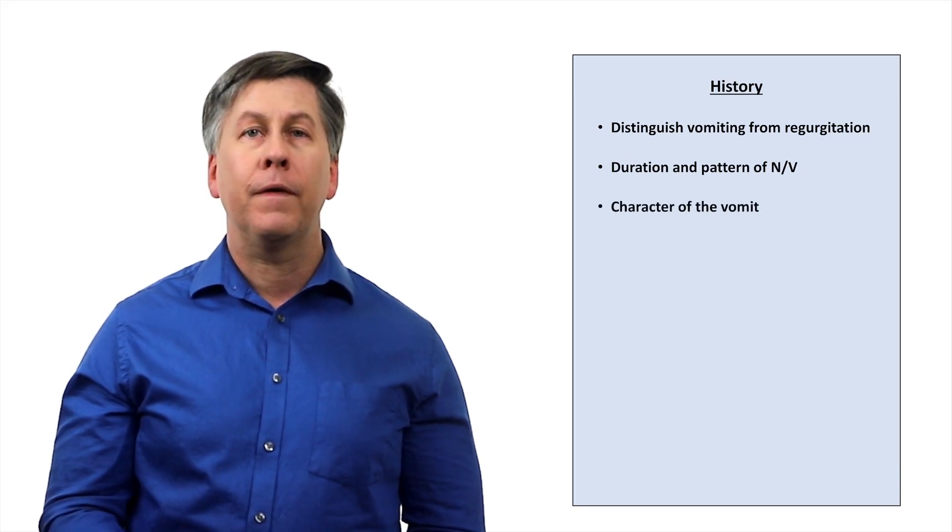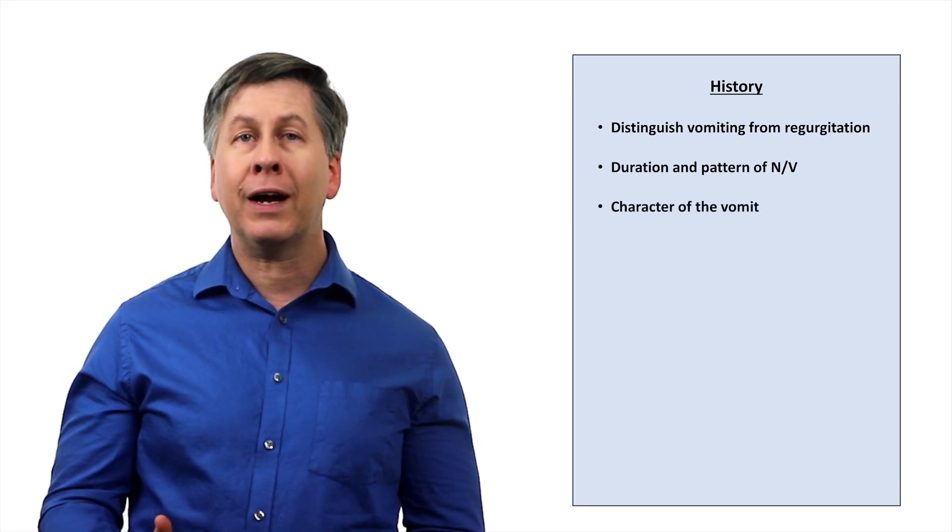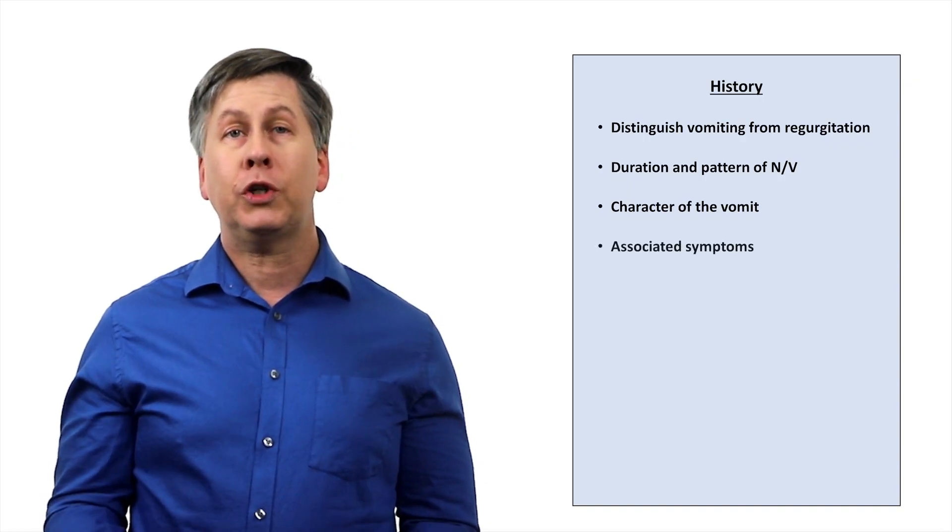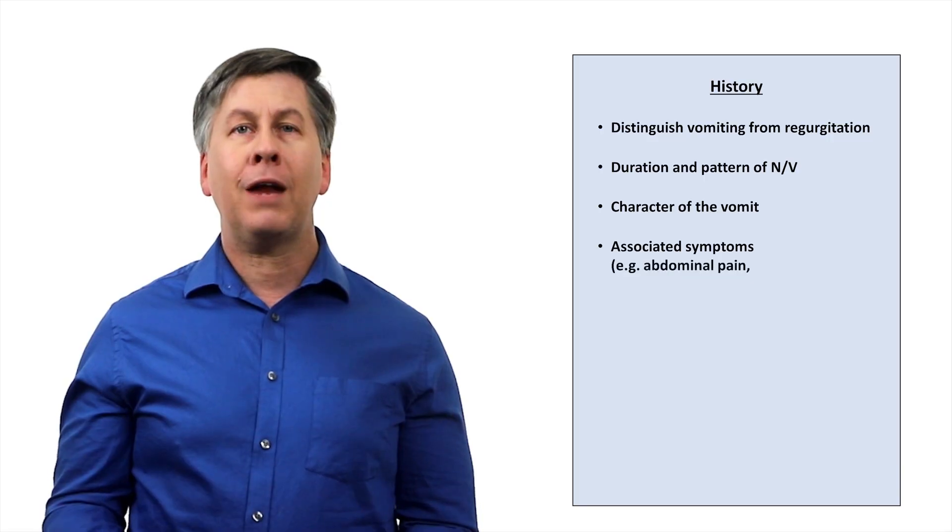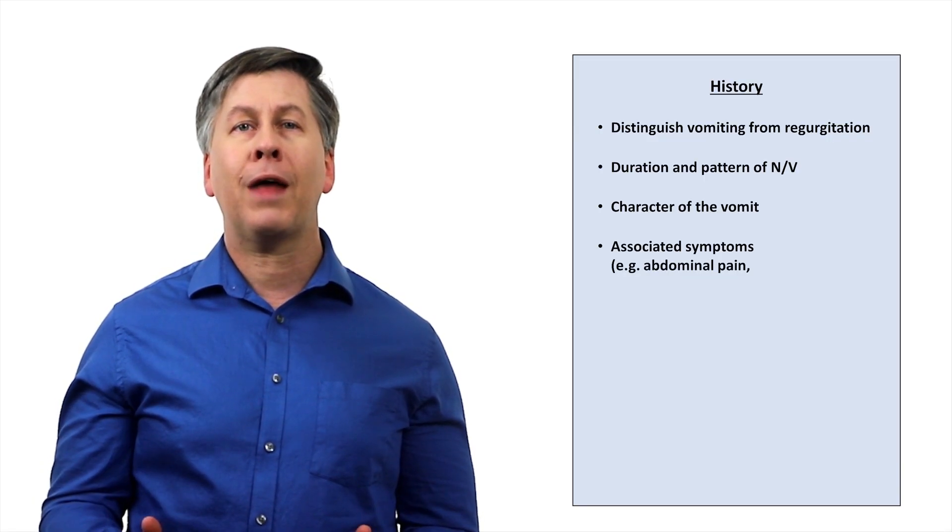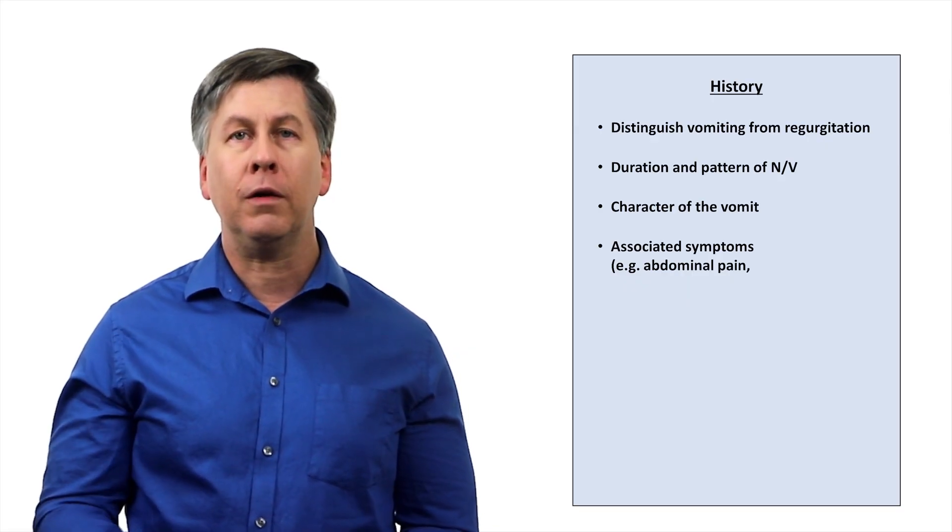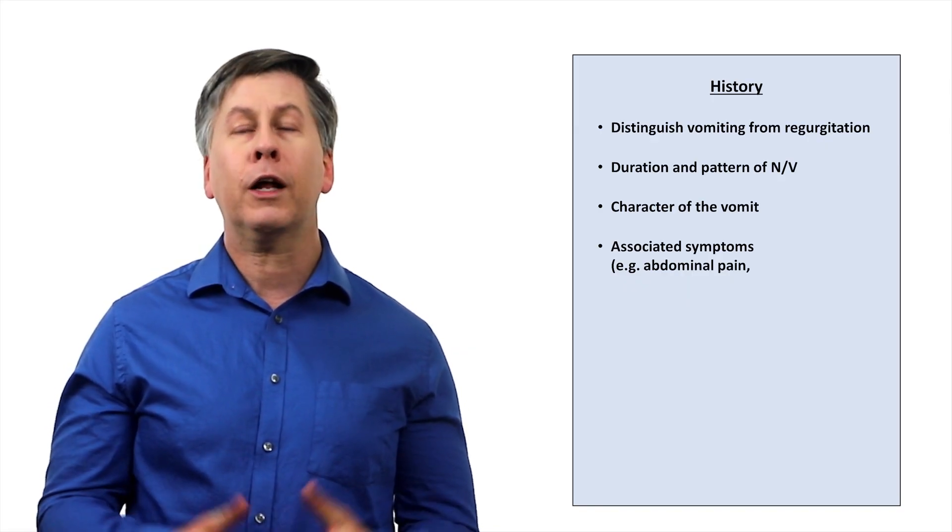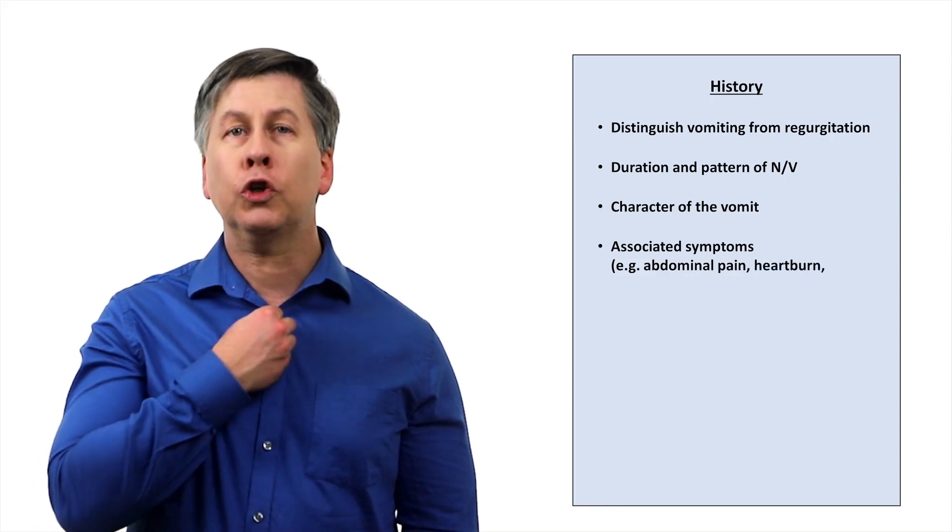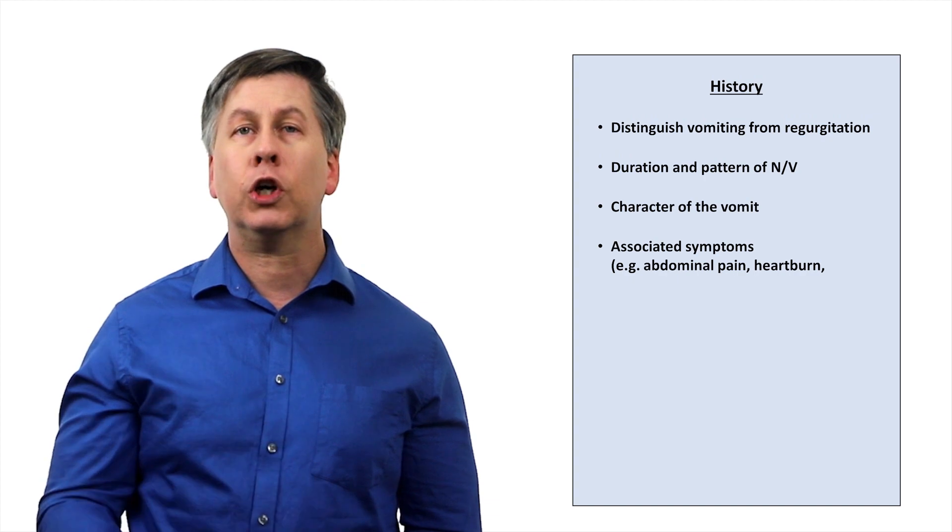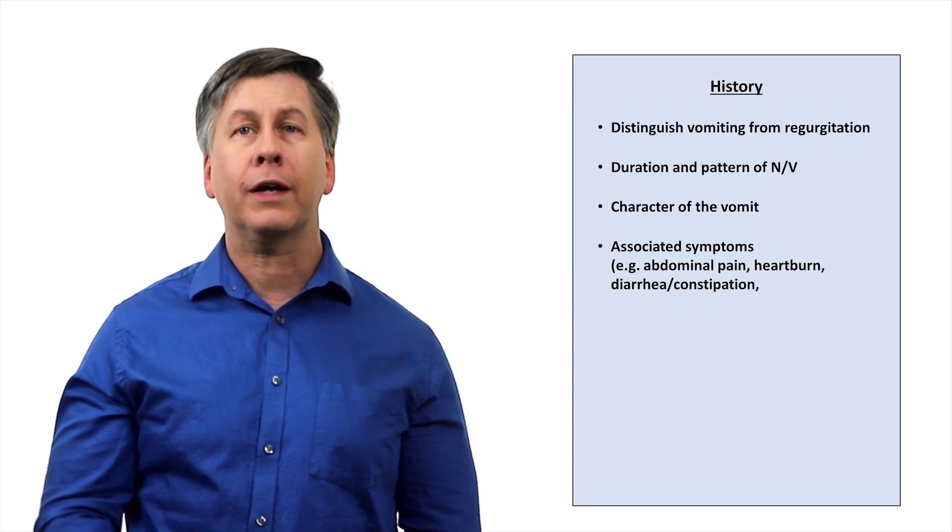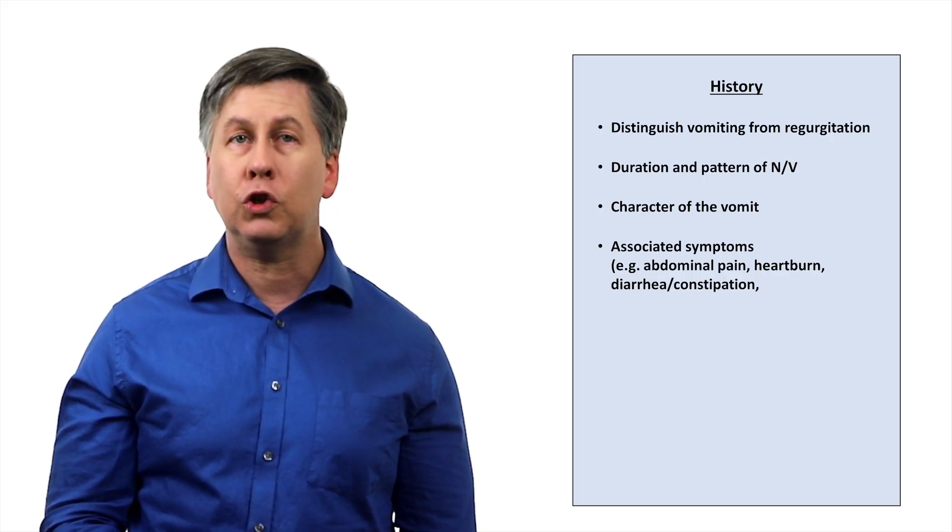What is the character of the vomit? The presence of material that looks like coffee grounds is suggestive of bleeding in the GI tract. Are there any associated symptoms? Abdominal pain that improves after vomiting can be seen in gastroparesis, whereas abdominal pain that persists unchanged by vomiting is more typical for flares of chronic pancreatitis. Heartburn, a layperson term for burning retrosternal pain after eating, suggests GERD.